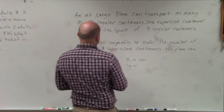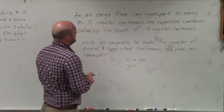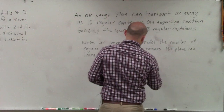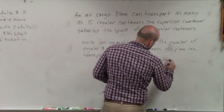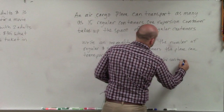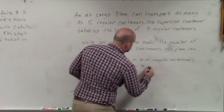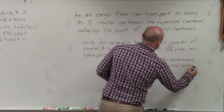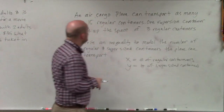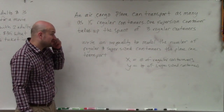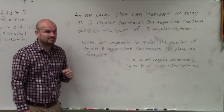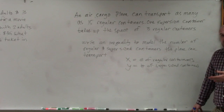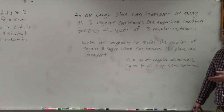The airplane can transport as many as 15 regular containers. So we have the number of regular containers and the number of supersized containers. It does say one supersized container takes up the space of three regular containers, so how can we relate the number of supersized containers to that?